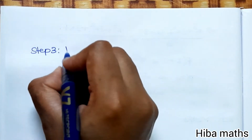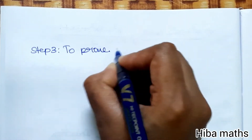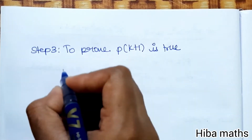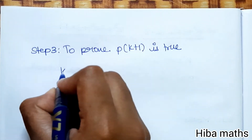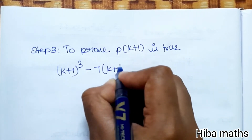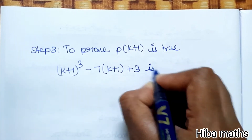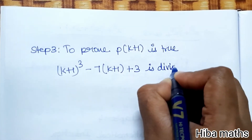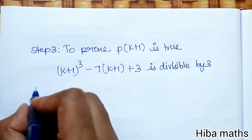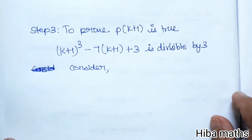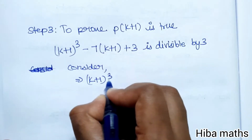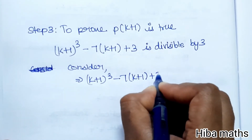Step 3: To prove P(k+1) is true, we need to show that (k+1) cubed minus 7(k+1) plus 3 is divisible by 3. Consider the expression (k+1) whole cubed minus 7(k+1) plus 3.